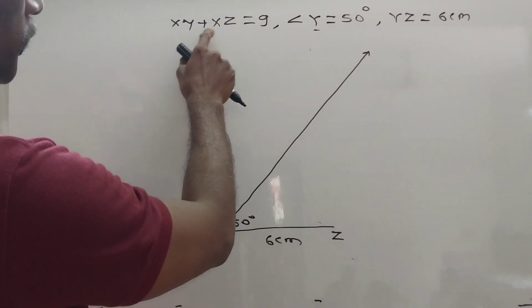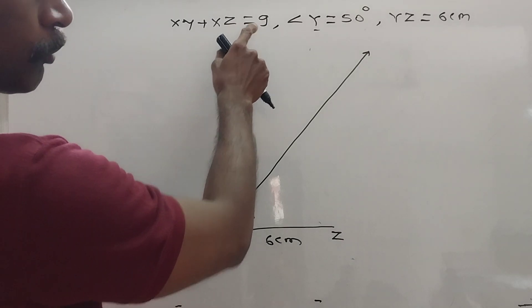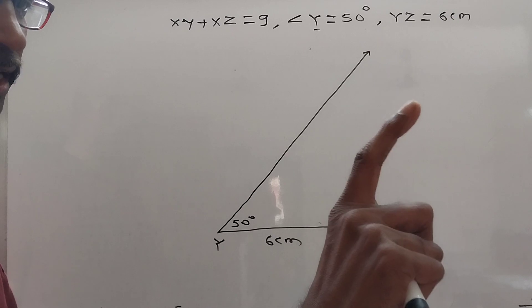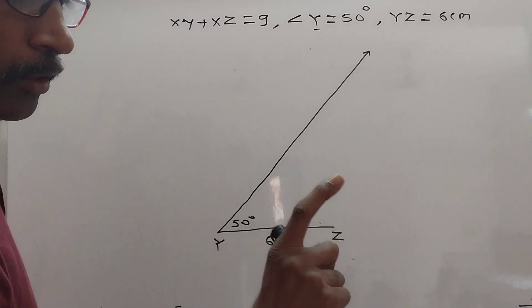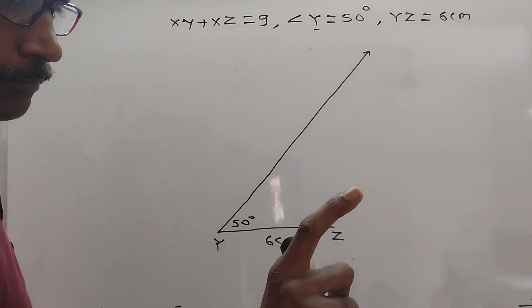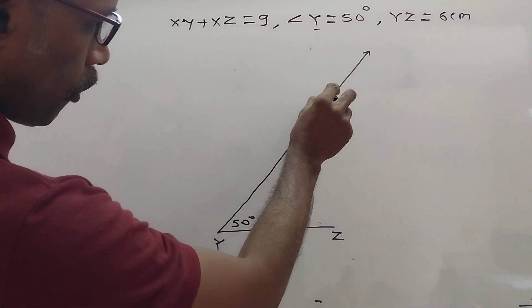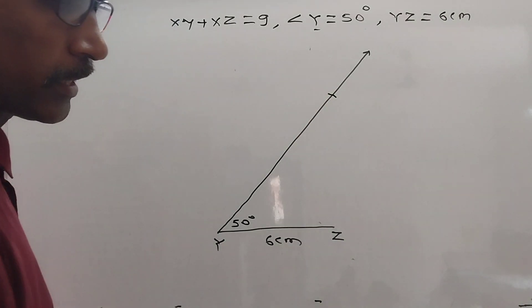Now, XY plus XZ is equal to 9. Take compass. On compass, take 9 cm with the help of scale. Did you understand? Then keep point active on Y and draw arc of 9 cm.